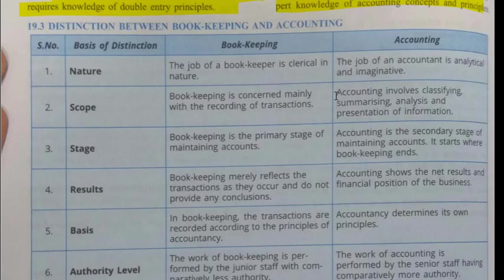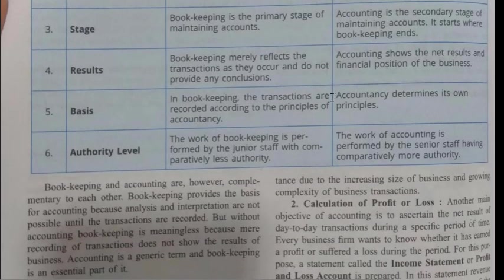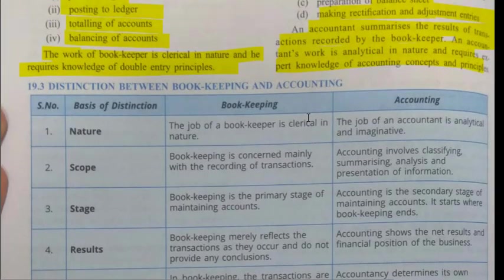Basis: in bookkeeping, transactions are recorded according to the principles of accountancy, whereas in accountancy, it determines its own principles and rules by which they are recorded. Authority level: the work of a bookkeeper is performed by junior staff with comparatively less authority, whereas the work of accountancy is performed by senior staff having comparatively more authority. These are the six parameters on the basis of which we can distinguish between bookkeeping and accounting.